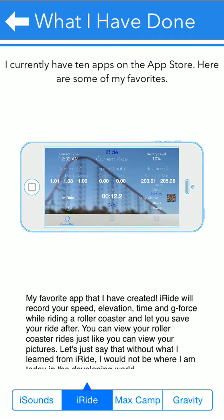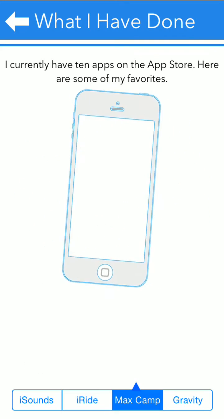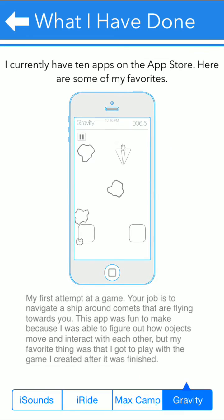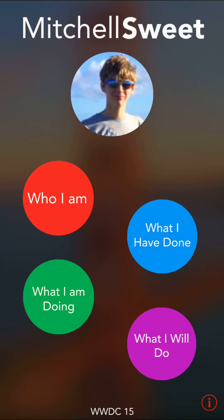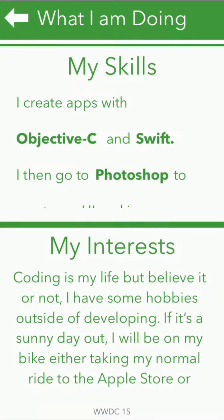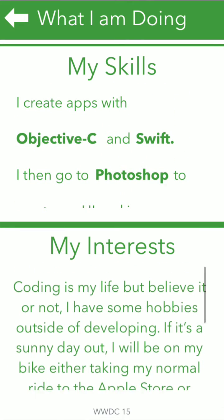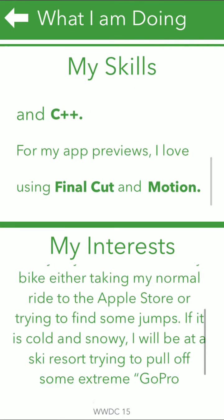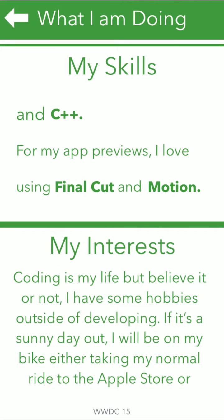Then iWrite is a landscape app so it turns landscape, parallax works there too, and there's the description — same with all the other apps. Now I'll go into 'What I Am Doing,' which is where it shows my skills and my interests. Each skill is highlighted and my interests are a general description of what I like to do other than developing.